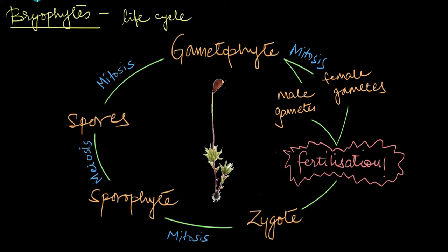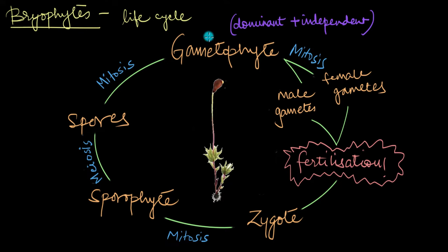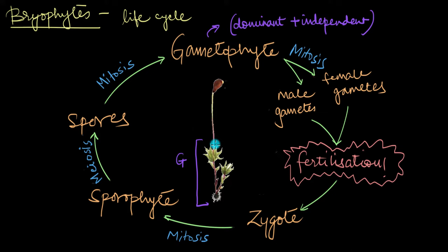If we look at the bryophytes, which are the simplest plants of the kingdom, we'll see that they show a dominant and independent gametophyte — meaning the haploid stage occupies a major portion of their lives. The main plant, the one with the leaf-like, root-like, or stem-like structures, belongs to the gametophyte generation.